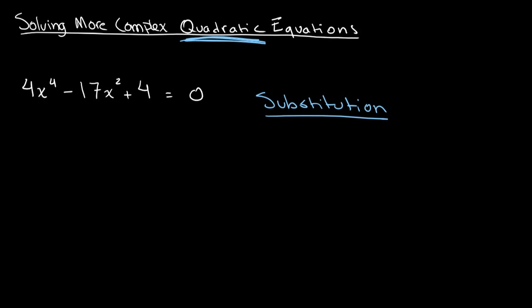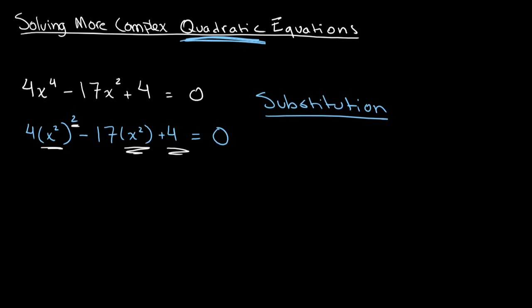If we want to remake this into the form of a quadratic equation, we can write it as 4 times (x squared) squared minus 17 times x squared plus 4 is equal to 0. Over here we have our variable x squared, which is to the power of 2, to the power of 1, and then no x squared in the constant term. So we substitute x squared with another variable — let's say y is equal to x squared — giving us 4y squared minus 17y plus 4 is equal to 0.